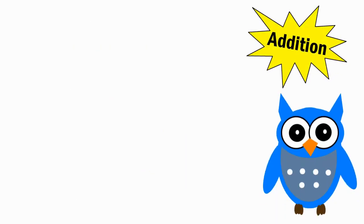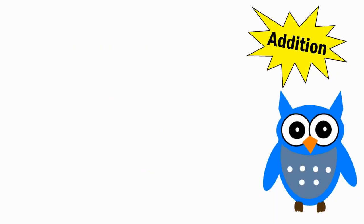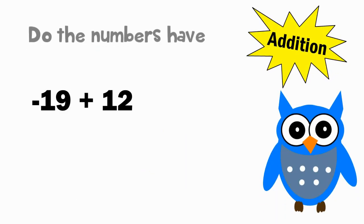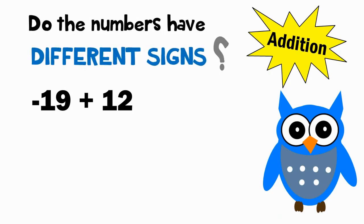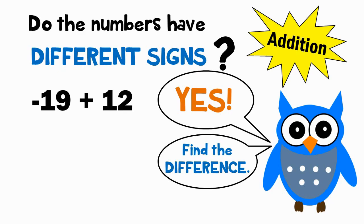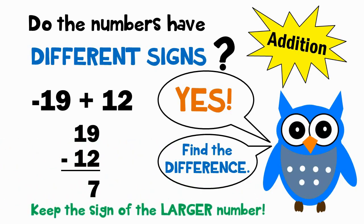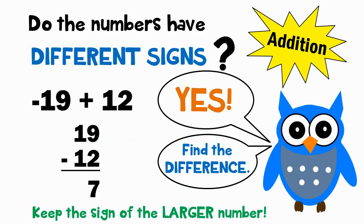Negative 19 plus 12. Do the numbers have different signs? Yes. Find the difference: 19 minus 12. This equals 7. Keep the sign of the larger number. 19 is larger. It is negative. So the answer is negative 7.